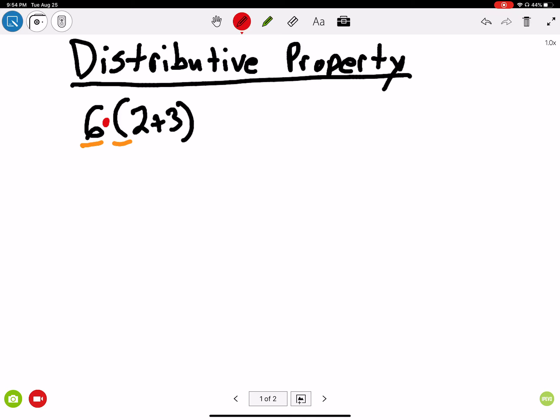So what this actually says is 6 times the sum of 2 plus 3. This says 6 times the sum of 2 plus 3. So if I wrote this out, this says 6 times the sum of 2 plus 3.